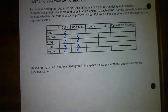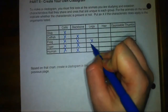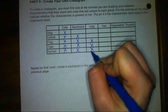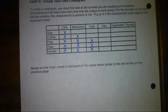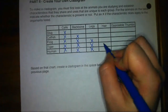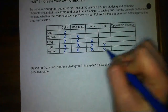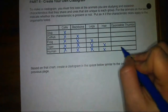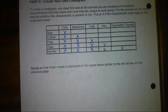Working through the chart further: frog, tiger, and human all have legs. Only the tiger and human have the trait of hair. And then of course, only a human has an opposable thumb — a thumb that opposes the other fingers and can be used to grasp things like tools.